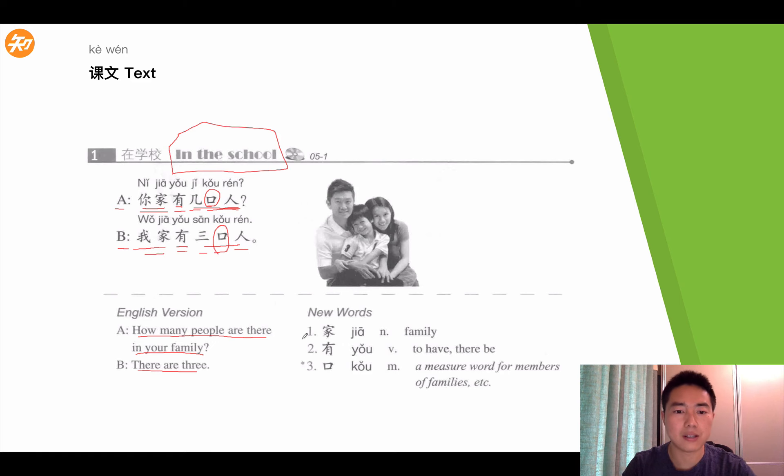Let's take a look at the new words. The first one, 家, 家 here is the noun, means family. 有, 有 means there to, there be or to have something. So, it's a verb here. The third one, 口. 口 is the measure word for members or for people or family, or etc. Because there are other usages for 口 as well. Okay, let's take a quick review of this conversation.